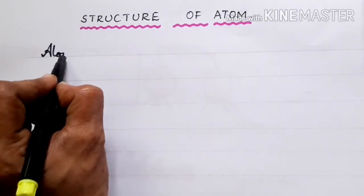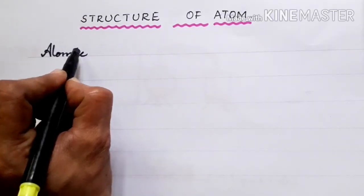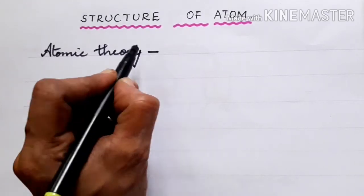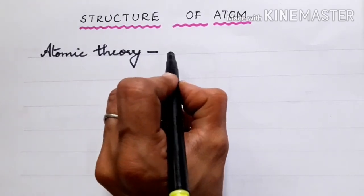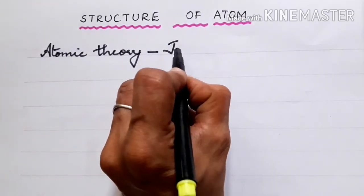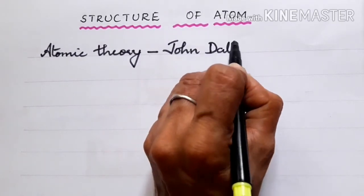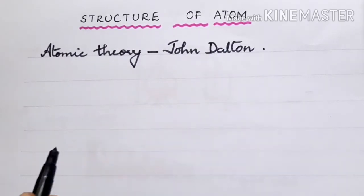The atomic theory was put forward by the scientist John Dalton. It states that all matter is made up of indivisible particles called atoms. He considered atoms as hard, dense, indivisible particles of matter.